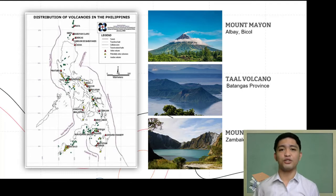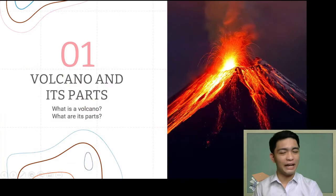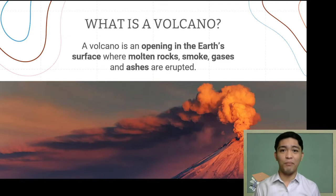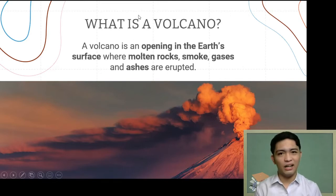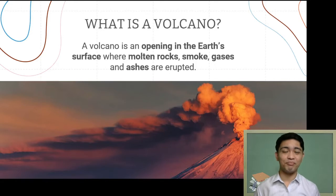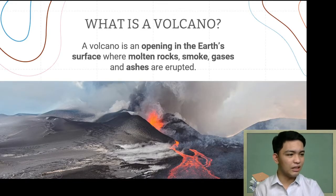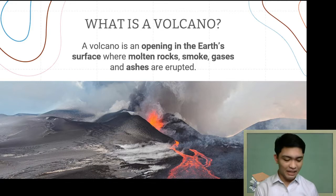These three are just some of the many examples of volcanoes in the country, and there are many more in other parts of the world. But what really is a volcano? A volcano is an opening in the earth's surface or crust where molten rocks, smoke, gases, and ashes are erupted. It's not necessarily the case that volcanoes have to be high or steep — we'll see that in our examples. Volcanoes are signs that the earth is actually active.